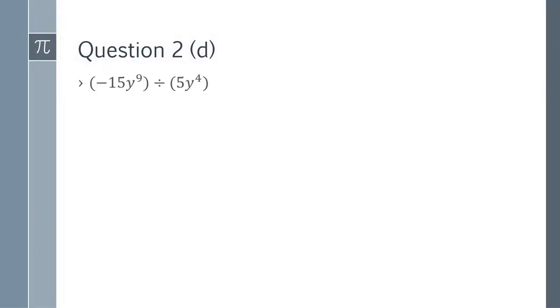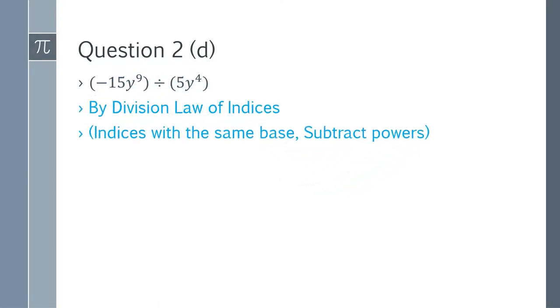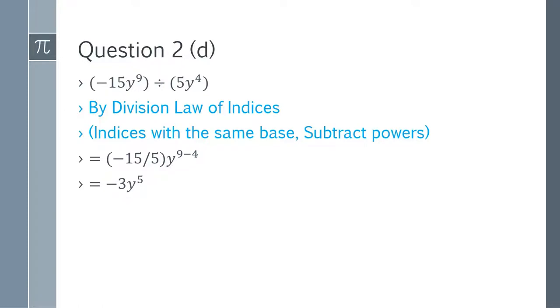Question 2d: (-15y^9) divided by (5y^4). By the division law, we subtract the powers of the same base and divide the coefficients. -15 ÷ 5 = -3, and y^(9-4) = y^5. The answer is -3y^5.